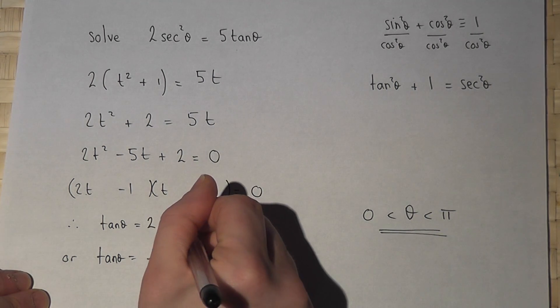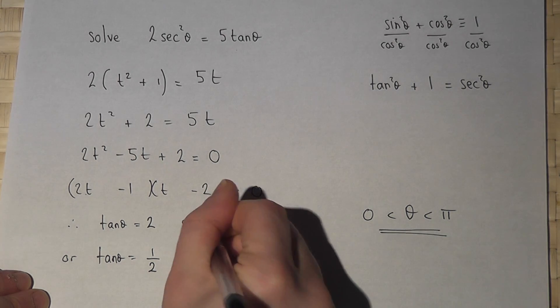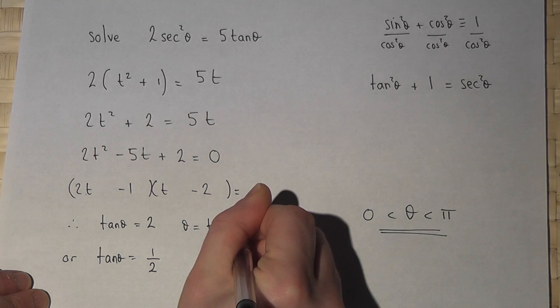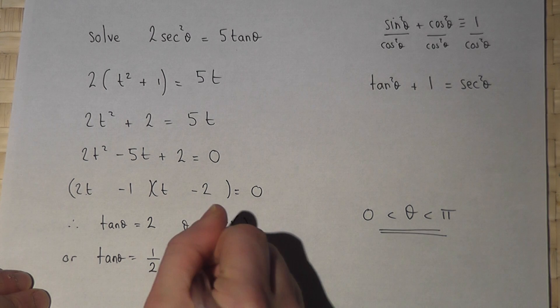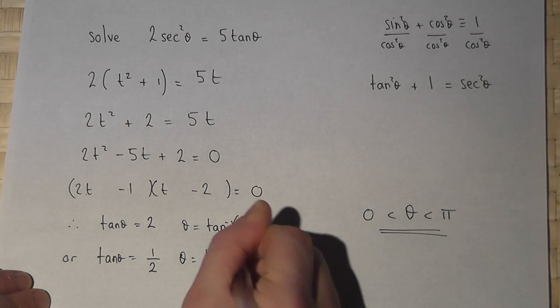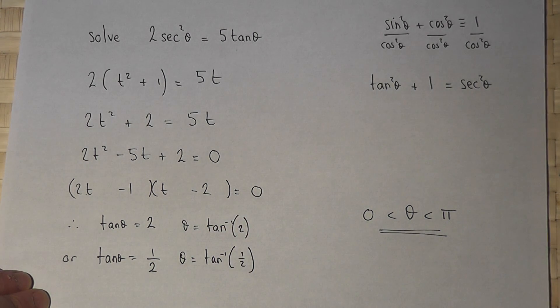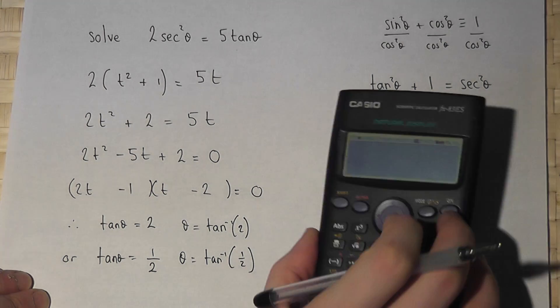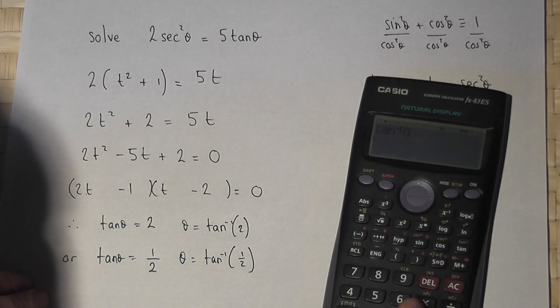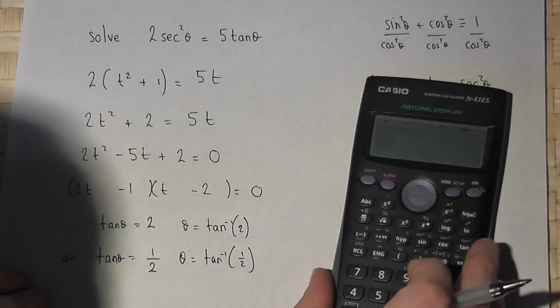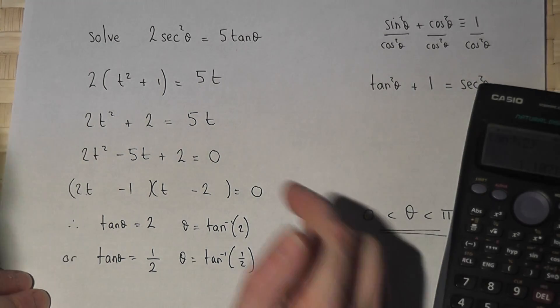To find theta, I just do inverse tan of 2 and inverse tan of 1 half. Make sure we're in radian mode. Shift tan of 2 gives me 1.107.